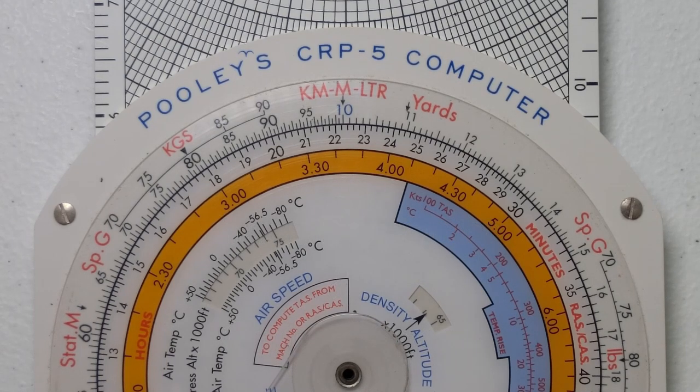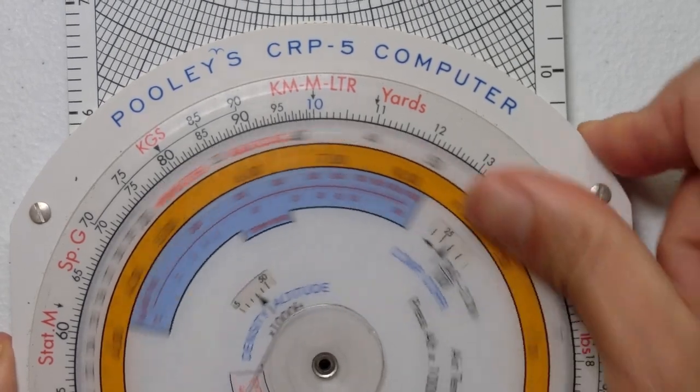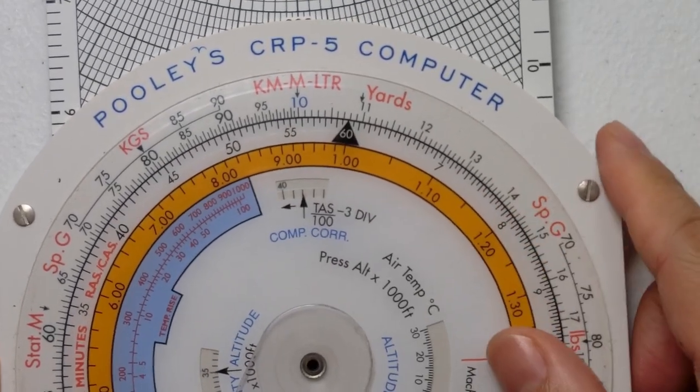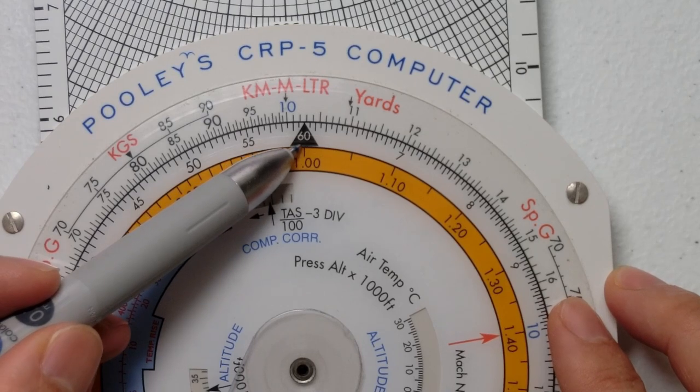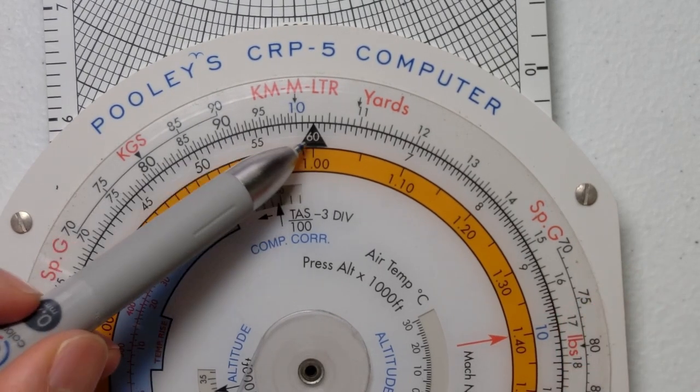There are three steps to calculate time using the CRP-5. The first step is to align our 60-minute marker, which is this black triangle—it says 'six zero minutes' inside—we need to align that with the ground speed.